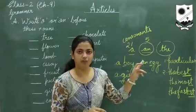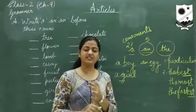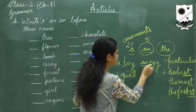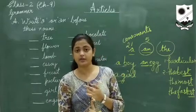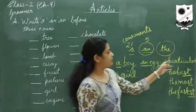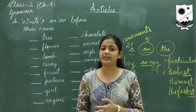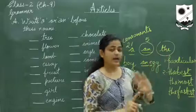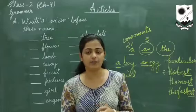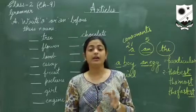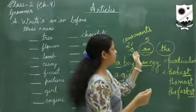'An' we use with the vowels. We have five vowels, so whenever a word begins with a vowel sound, we use the article 'an'. When the word begins with a consonant sound, we use the article 'a'. When we talk about a particular person, place, or thing, we use 'the'. With superlative degrees also we use 'the'. And with special names — for example, the Taj Mahal — again we use 'the'. So these are the usages of all three articles.